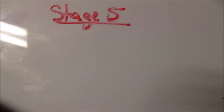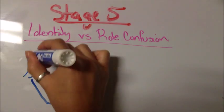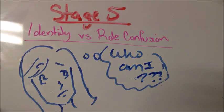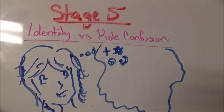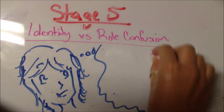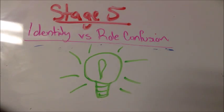Stage 5, Identity versus Role Confusion. This stage occurs in adolescents who begin to wonder what their role in life is and who they are as an individual. They may experiment with a variety of behaviors such as changing their look, wondering about their religion, their sexual orientation, and what they want to do with their life. Although this brings confusion, eventually most adolescents achieve a sense of identity in regards to who they are.